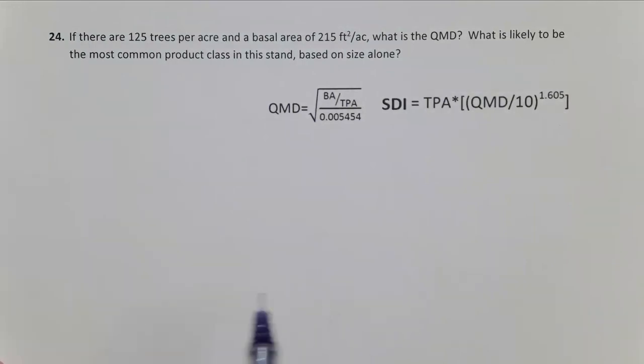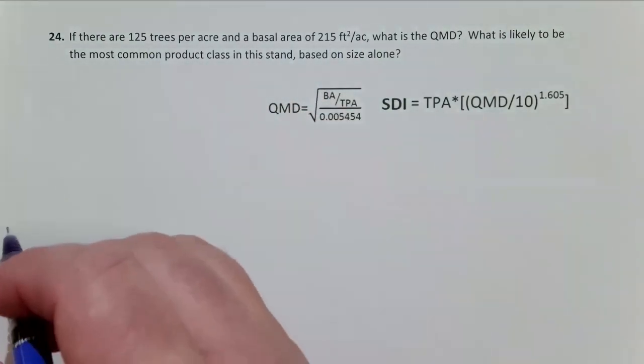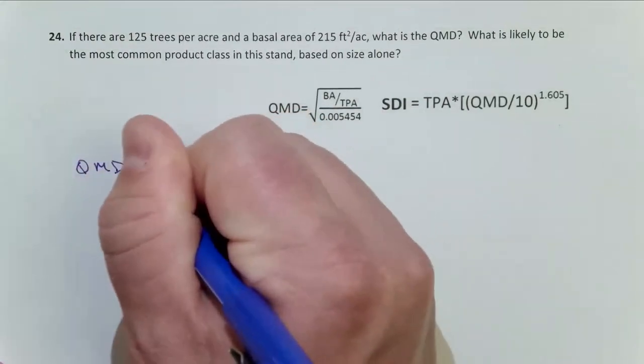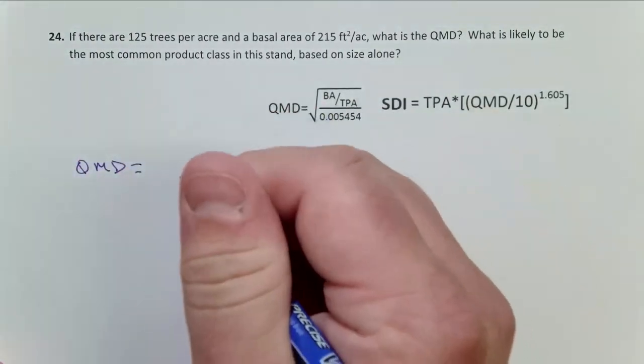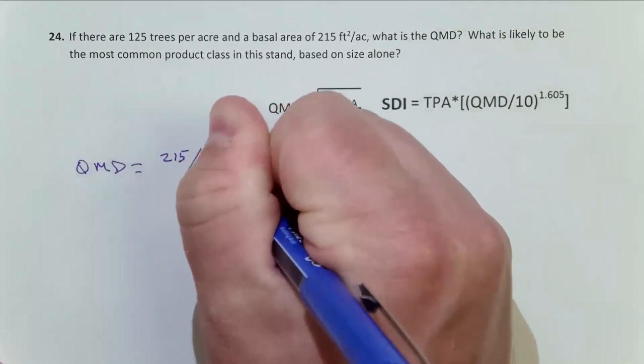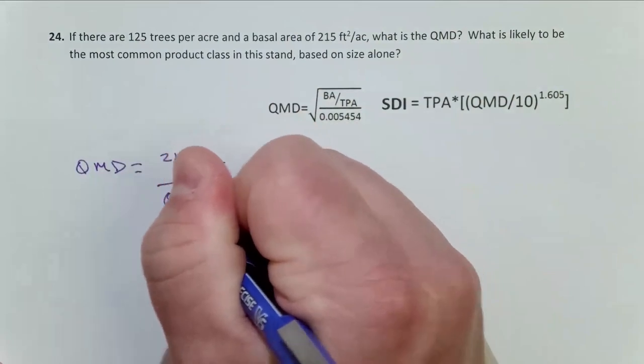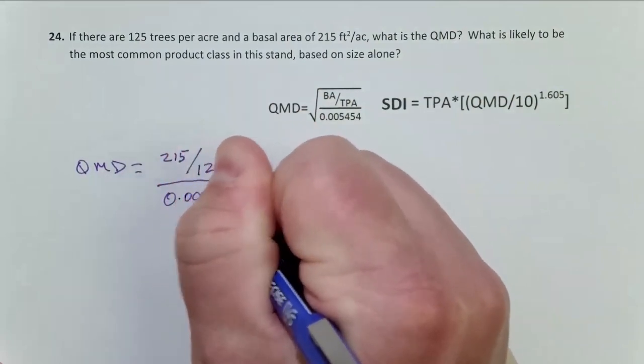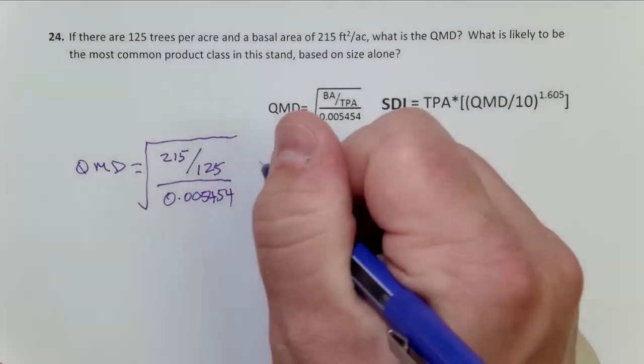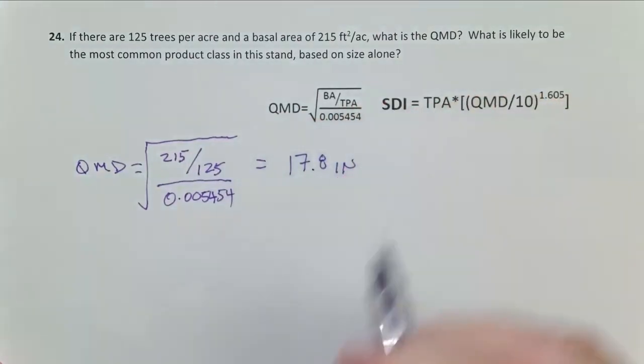First off, I'll take this QMD equation here. I have basal area, I have trees per acre. So QMD equals basal area over trees per acre. That's going to be 215 divided by 125. I do that in my calculator first, then I divide that by 0.005454. Get that number in my calculator, then on the order of operations, I take the square root of all that.